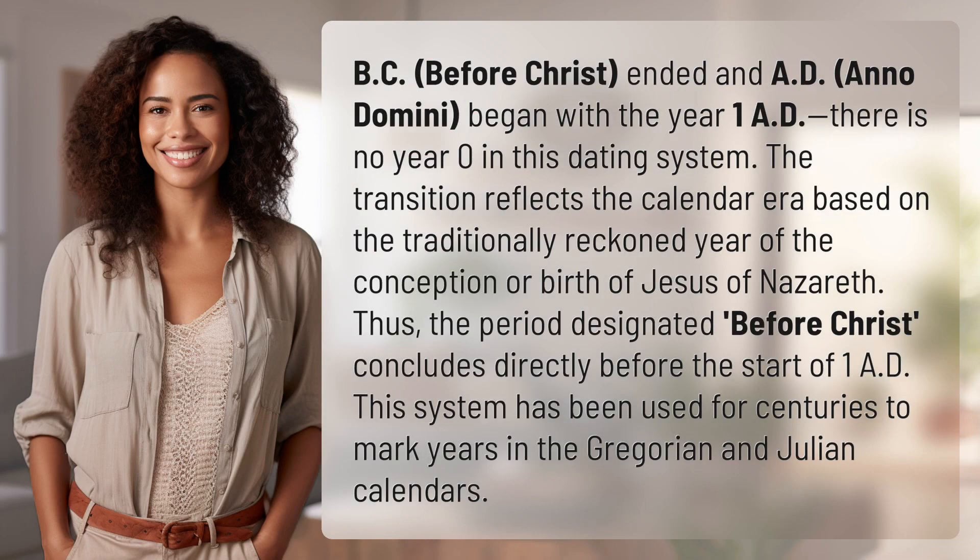BC, before Christ, ended and AD, Anno Domini, began with the year 1 AD. There is no year 0 in this dating system.